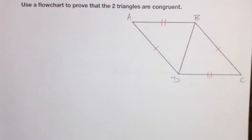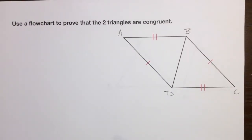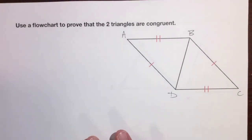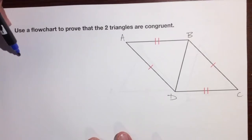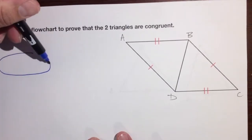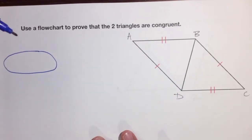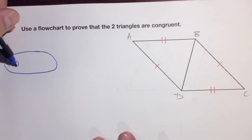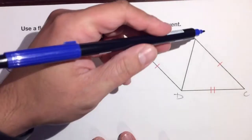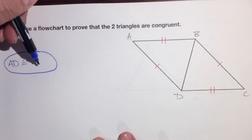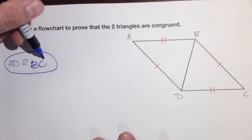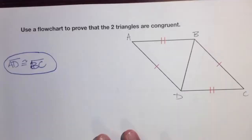Example number two: use a flowchart to prove that the two triangles are congruent. Draw this in your notebooks. Let's always start with the givens — what does the problem give us? We have AD is congruent to BC.